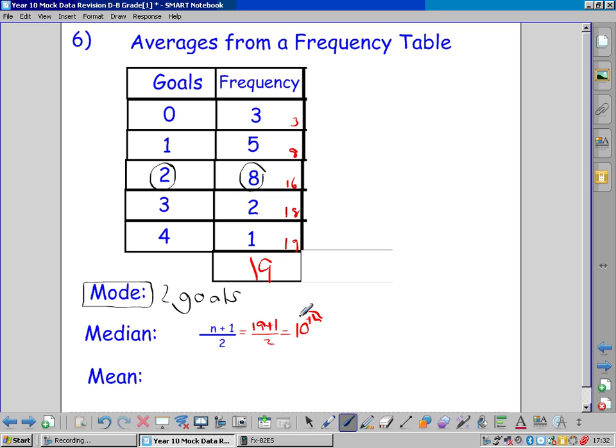Where would the 10th game be? Well, here's the first 3 games, then 8. The 10th game would be one of these games, with the 3rd game in here. Which means the median goals per game is 2, because the 10th game would be in this row, so it would be 2. So the answer is 2 goals.